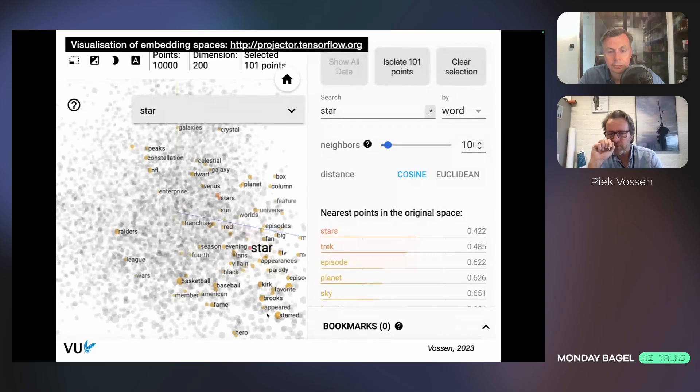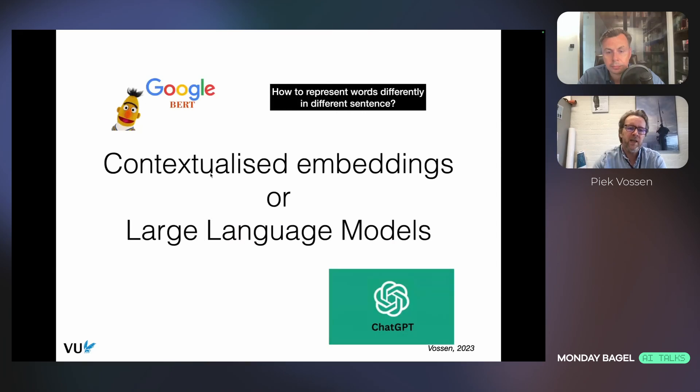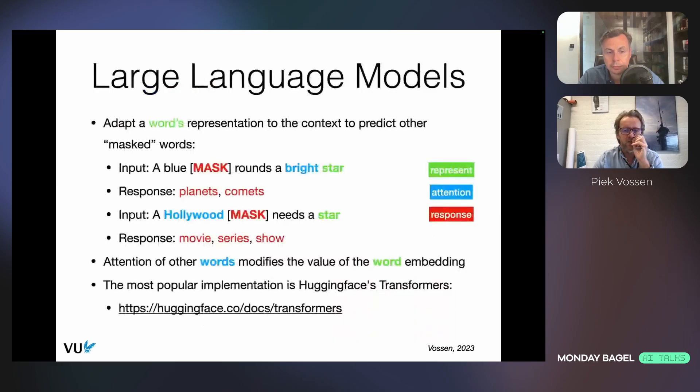Here it needs to stick to a compromise. It cannot choose between one or the other. The large language models that we now have today actually solve this problem. The models like Google BERT, but also ChatGPT use the same principle. They do not just represent the word as the average over all the occurrences. They represent the word in the actual sentence in which you present the word. That means that initially it may say star will have this kind of compromised meaning, but I'm going to adjust the meaning using the attention of other words in the context.